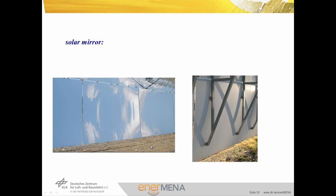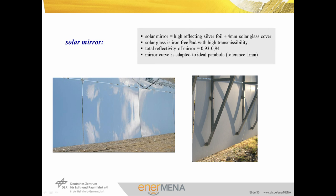The solar mirrors are highly reflective silver foils with a 4 mm solar glass cover. The solar glass is iron-free with high transmissibility. The total reflectivity of the mirrors is 0.93 to 0.94. The mirror curve is adapted to the ideal parabola with a tolerance of 1 mm, and it is very important that the cantilever arms are assembled inside a special jig to give the final correct position of the mirrors.